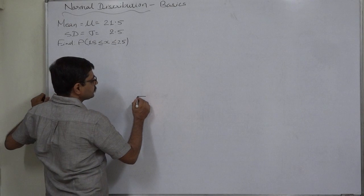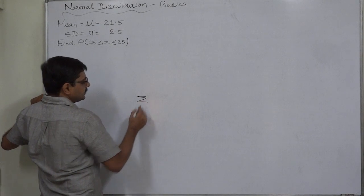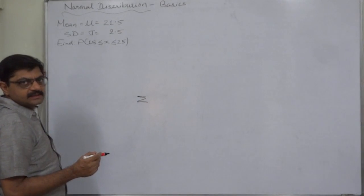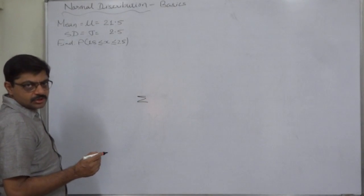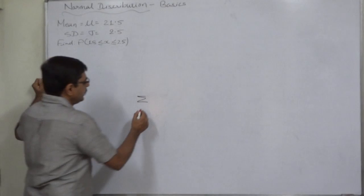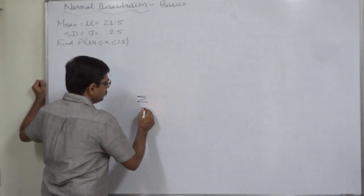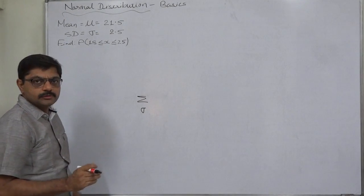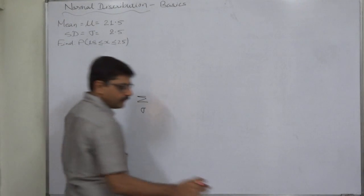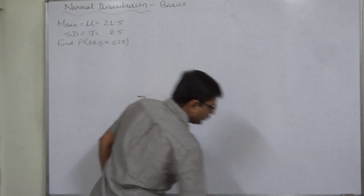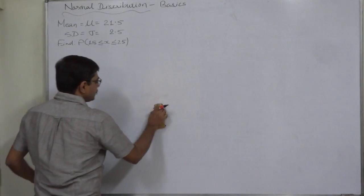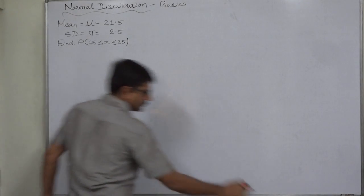There are two kinds of sigma symbols. Capital sigma is the sign of summation or total, while small sigma is normally used as the sign for population standard deviation in normal distribution.